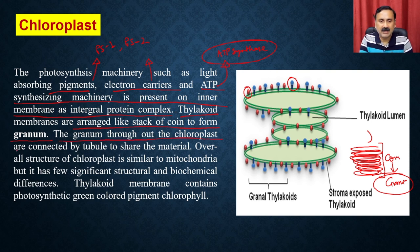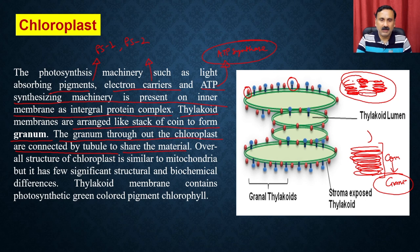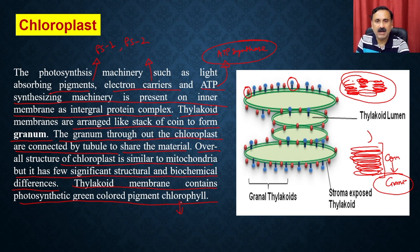The grana throughout the chloroplast are connected by tubules to share material. The overall structure of the chloroplast is similar to the mitochondria but has significant structural and biochemical differences. For example, the thylakoid membrane contains the photosynthetic green pigment called chlorophyll. The major function of the chloroplast is to participate in the reactions called photosynthesis.